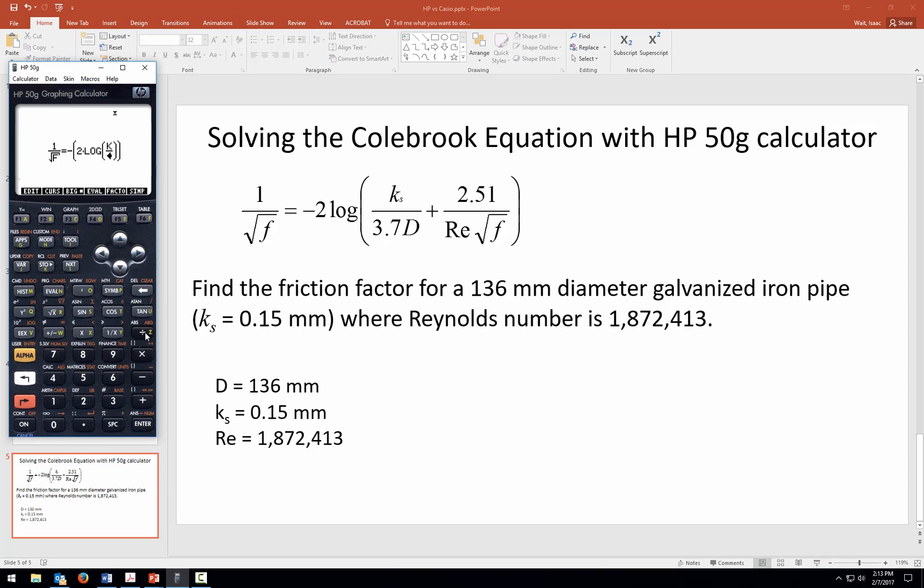Log k_s, so I'm going to call that just the variable k, divided by 3.7D plus 2.51 divided by R, which is what I'm going to call the Reynolds number, square root of f. Okay, so the equation is entered.